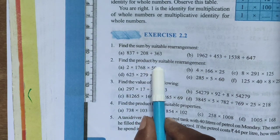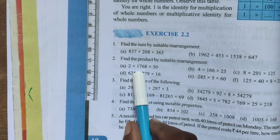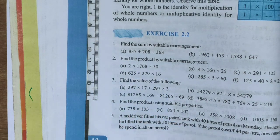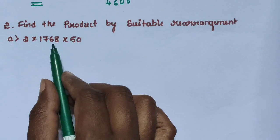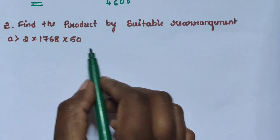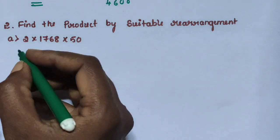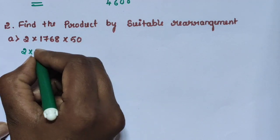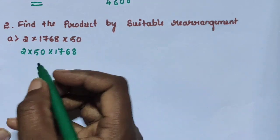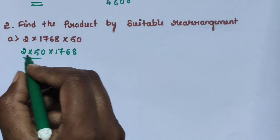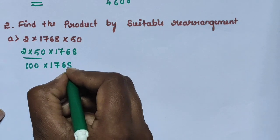Question Number 2: Find the product by suitable rearrangement. Sub-question A: 2 into 1768 into 50. Once again, 2 into 1768 into 50. Rearrange the numbers and multiply these 3 numbers. First, rearrange as 2 into 50 into 1768. Multiply these 2 numbers: 2 into 50 is 100, then 100 into 1768.